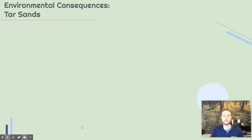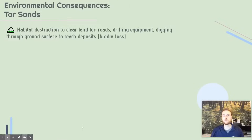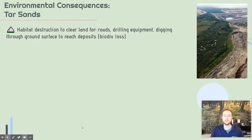Now we'll talk about some environmental consequences of extracting petroleum from tar sands. As with most forms of fossil fuel extraction, there's going to be some habitat destruction — this could be due to clearing land for roads, digging equipment, or the equipment itself. We can see a picture here where a boreal forest has been removed and fragmented — parts of the forest have been cut off from others — to clear land to access the tar sands and create roads to transport it.